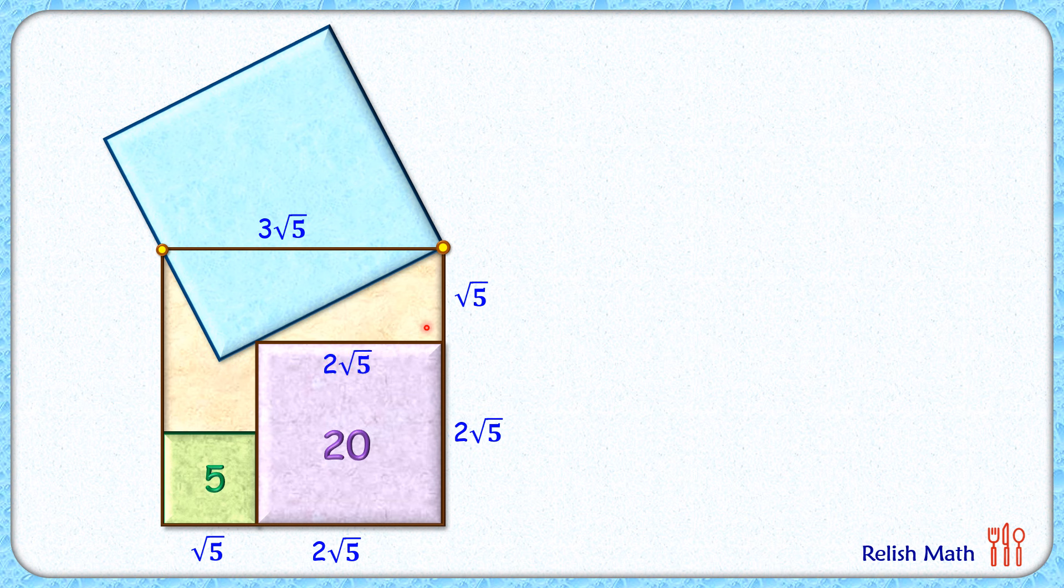Now here this angle is 90 degrees and this angle of the square is also 90 degrees. Let's assume this angle here is alpha degrees. Now as these two lines are parallel to each other and these are alternate interior angles, this angle will also be alpha degrees.